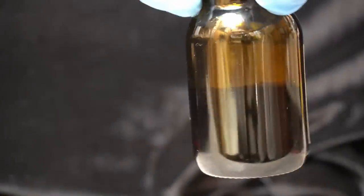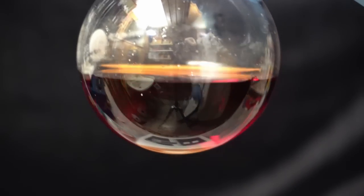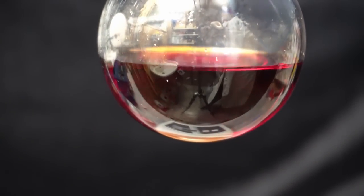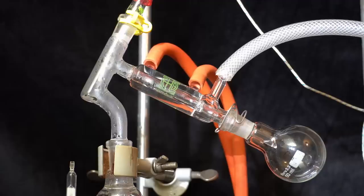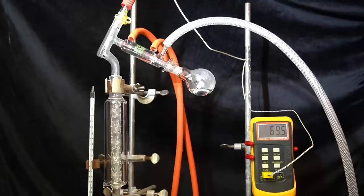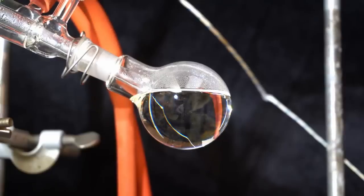Before I can start with the synthesis the aniline has to be cleaned up. During its storage time it has oxidized quite a bit and has turned into a deep red color, so I quickly perform a vacuum distillation. The distillate is completely colorless which you could say is the true color of aniline.